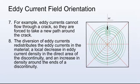The diversion of eddy currents redistributes the eddy currents in the material, which causes a local decrease in eddy current density in the direct area of the discontinuity and an increase in density around the ends of a discontinuity.